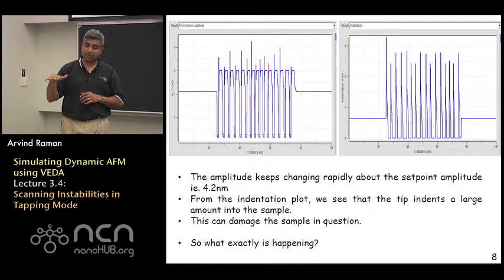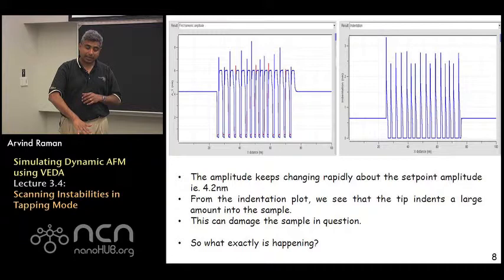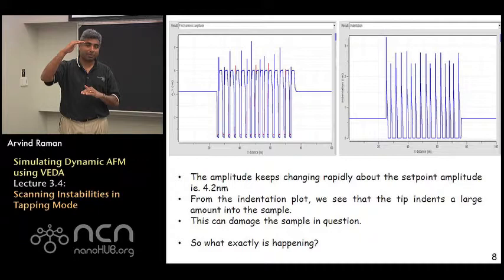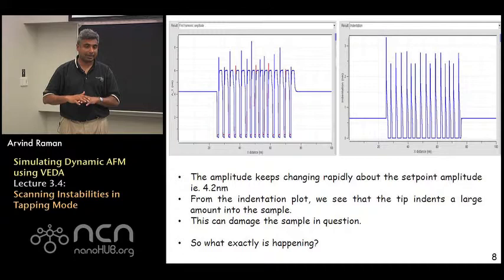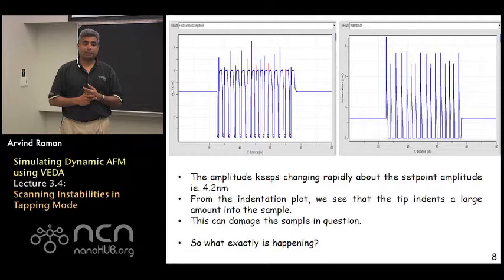What we find is that while the amplitude is nice and constant on the substrate, as soon as one hits the feature, the amplitude suddenly plunges, and then the z controller tries to move things and get the controller amplitude back up to the desired value at the 70% set point. It is not able to, and the amplitude goes back down again rapidly, and this keeps repeating itself.